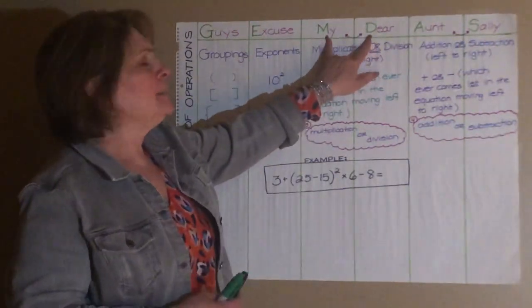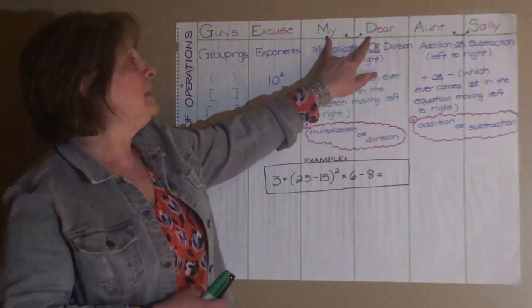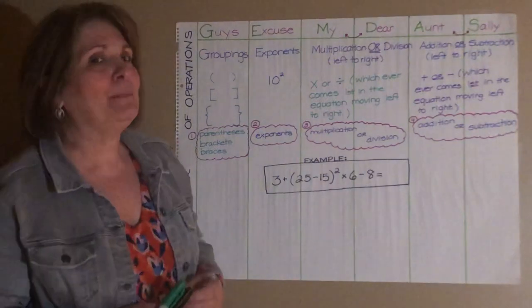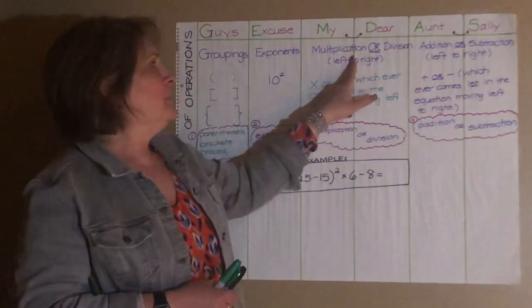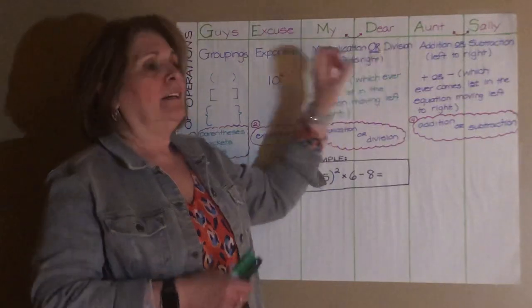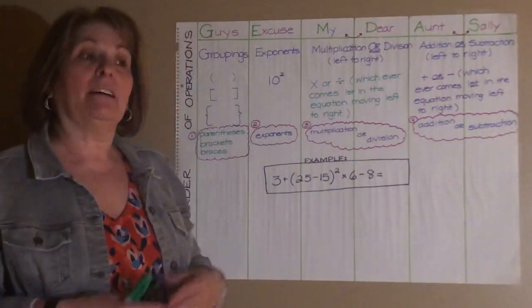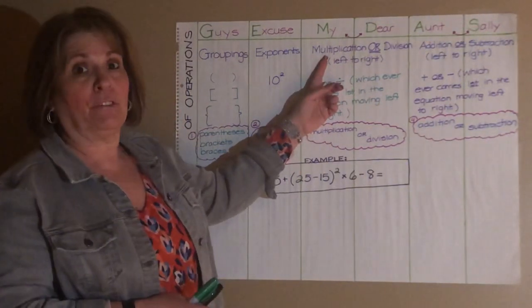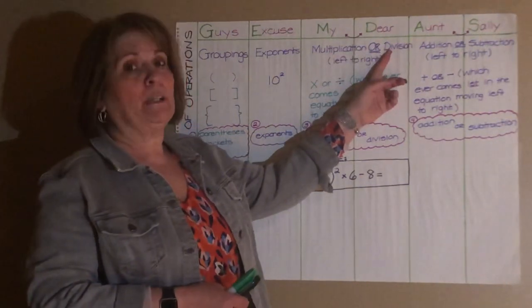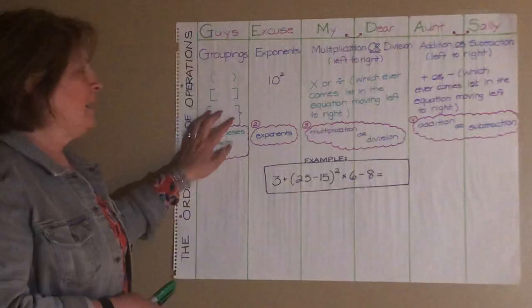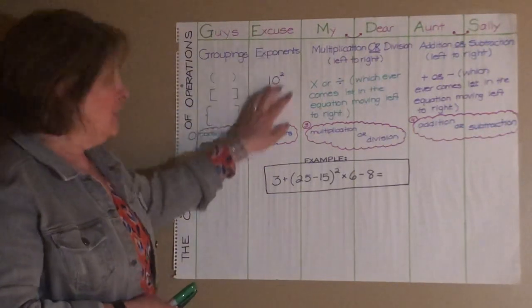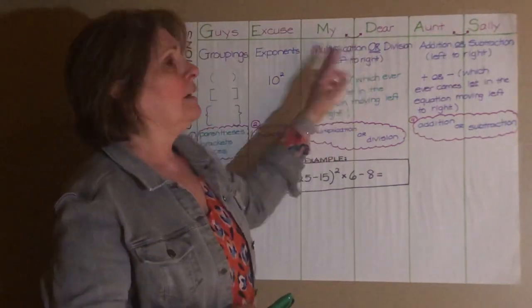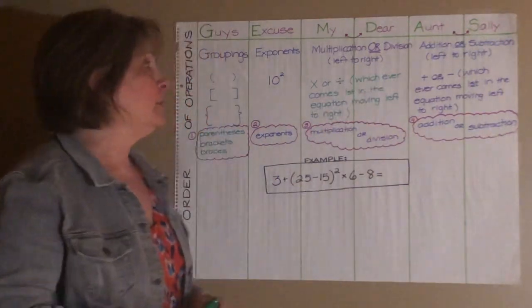M and D, these go together because sometimes it can be D and M. And if you think about an equation and what that M and D might stand for, you're right. It's multiplication or division. And the reason we say or is because whatever comes first in the equation, if multiplication comes first, we do that first. If division comes first, we do that first. We always do the groupings first. Then we do the exponents if they have them. Then multiplication or division left to right as you're solving the equation.